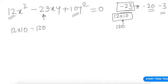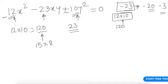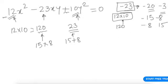So 120 must be split so that the parts add to 23. Can we say it's 15 × 8? Is 15 + 8 = 23? Yes. The same logic applies: it can be 15 and 8, or 8 and 15 — but since both added together must equal −23, and the product must equal 120, we use −15 and −8.